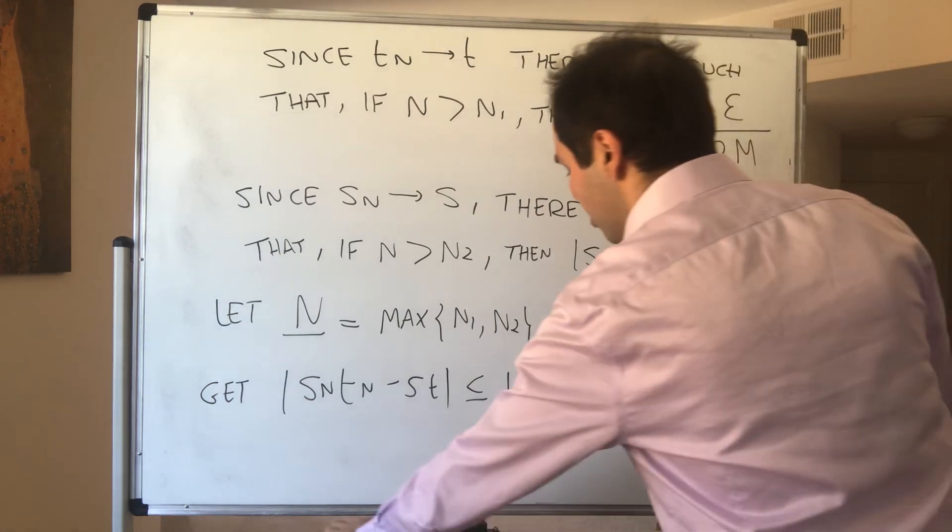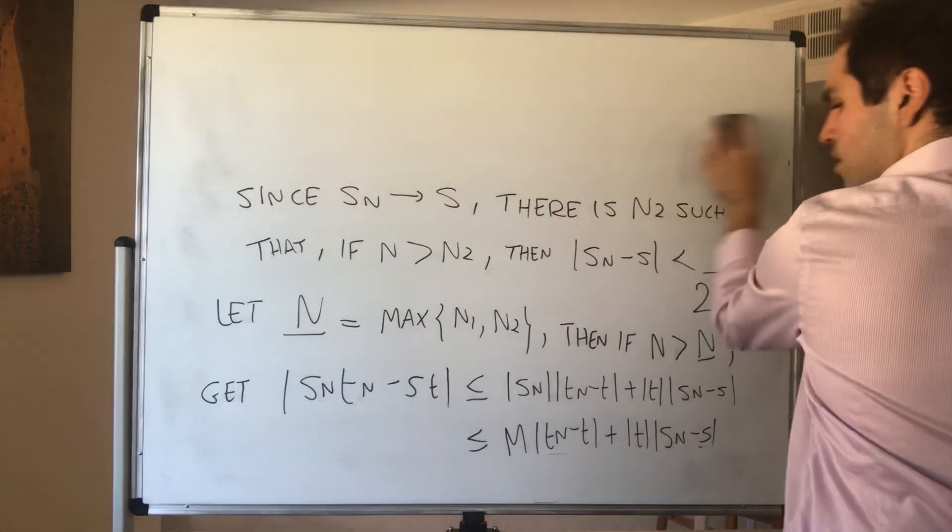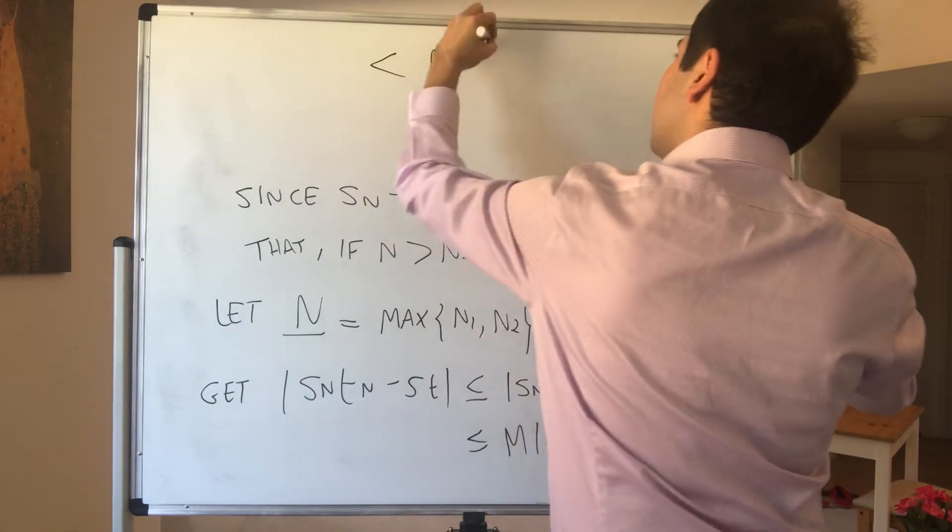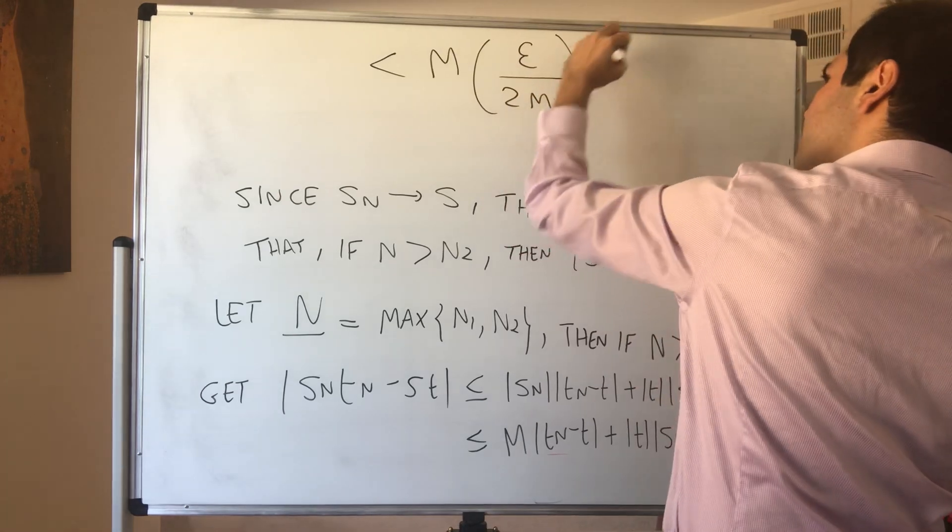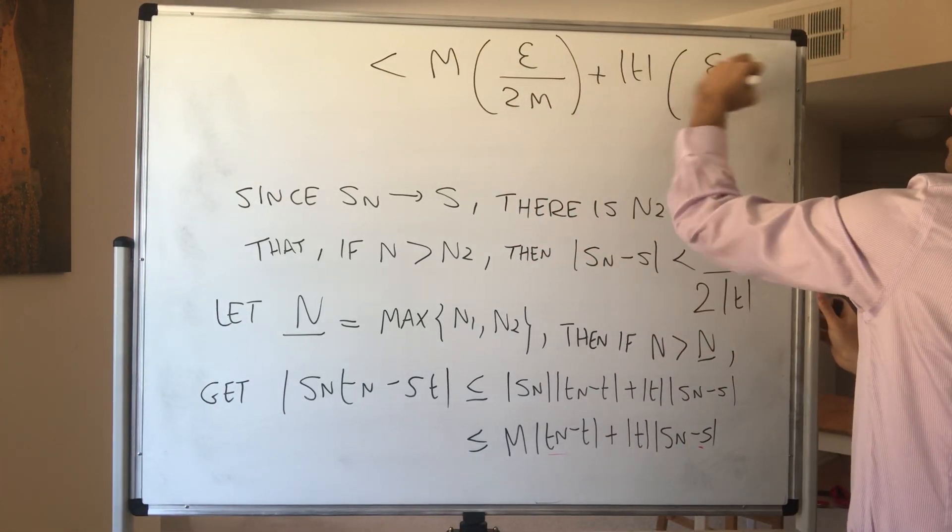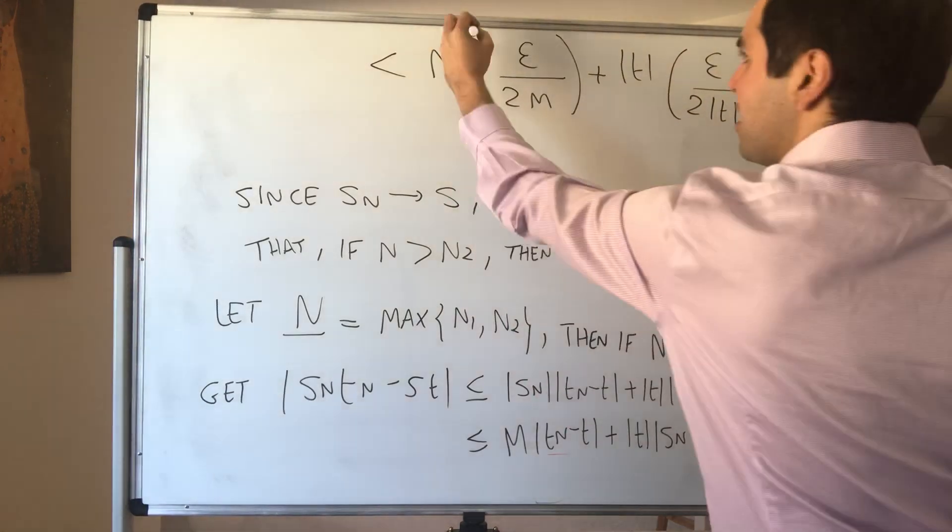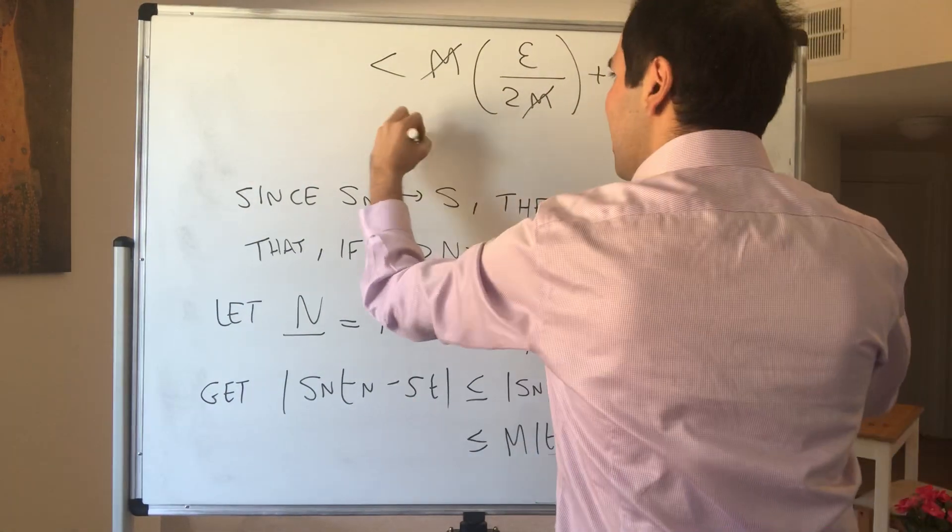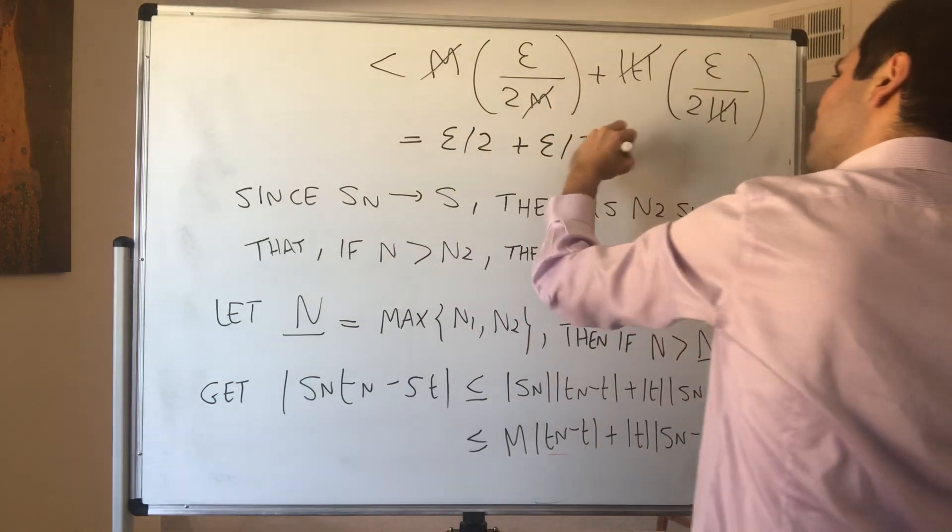So this becomes strictly less than M times epsilon over 2M plus absolute value of T times epsilon over 2 absolute value of T. And now this cancels out, this cancels out, and we get epsilon over 2 plus epsilon over 2.